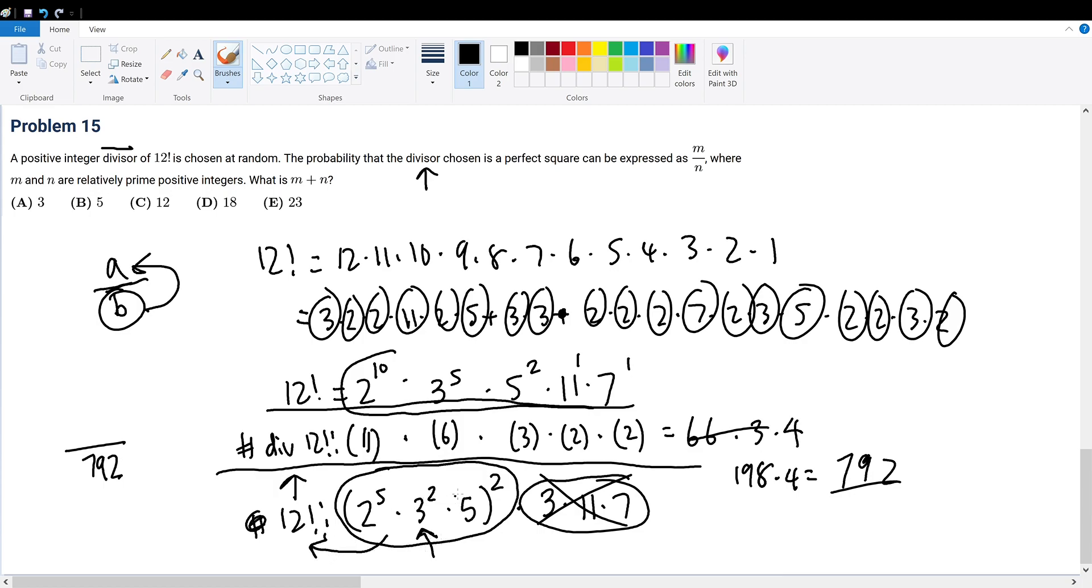How many factors are within this number? Treat 2 to the 5th times 3 squared times 5 as a single number n. If you want to find the number of factors for any number, we prime factorize it, raise each prime factor's exponent by 1, and multiply them together. n has now been conveniently prime factorized. Given its exponents, we can easily find out the number of factors, which is 5 plus 1 times 2 plus 1 times 1 plus 1, which gives us 18 times 2, which is 36.